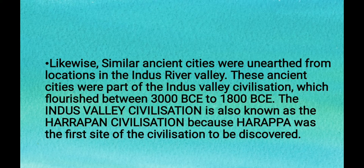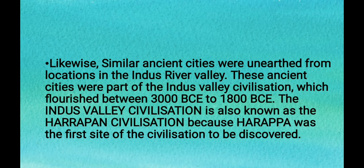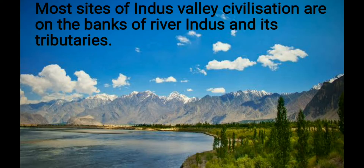Similarly, ancient cities were unearthed at locations in the Indus river valley. These ancient cities were part of the Indus Valley civilization, which flourished between 3000 BCE to 1800 BCE. The Indus Valley civilization is also known as the Harappan civilization because Harappa was the first site to be discovered. Most sites are located on the banks of river Indus and its tributaries.